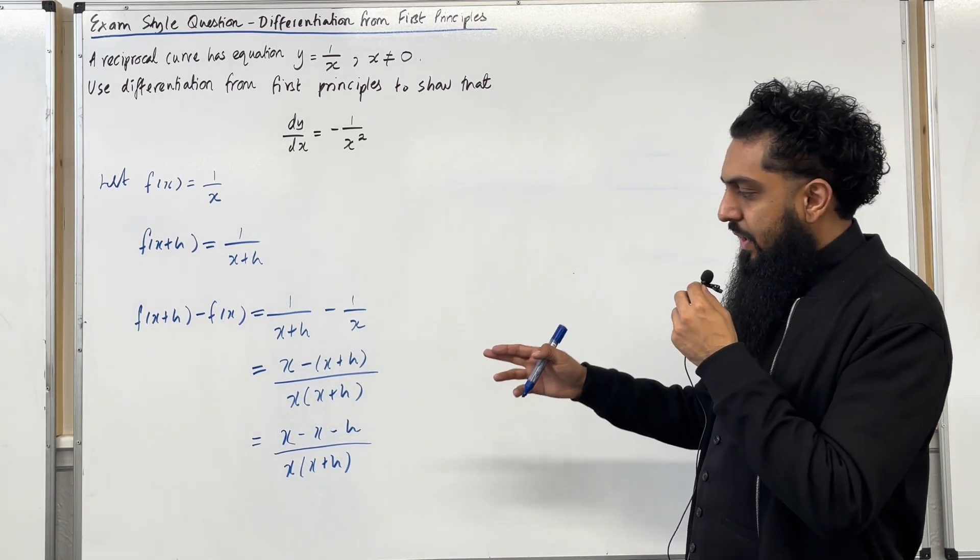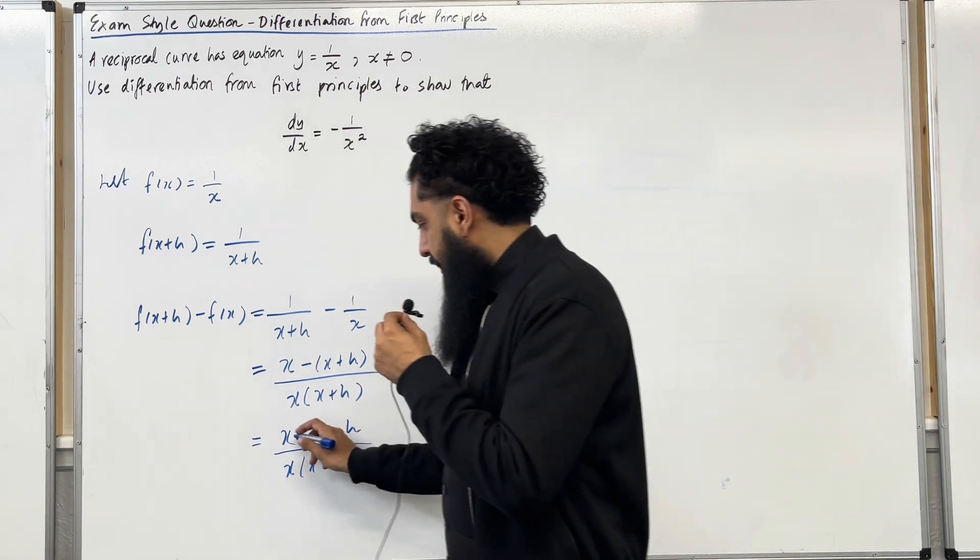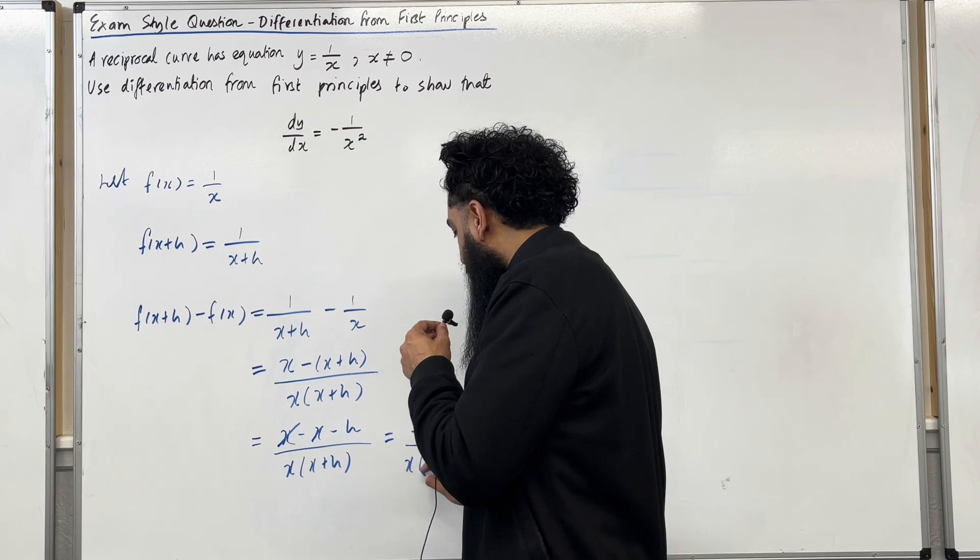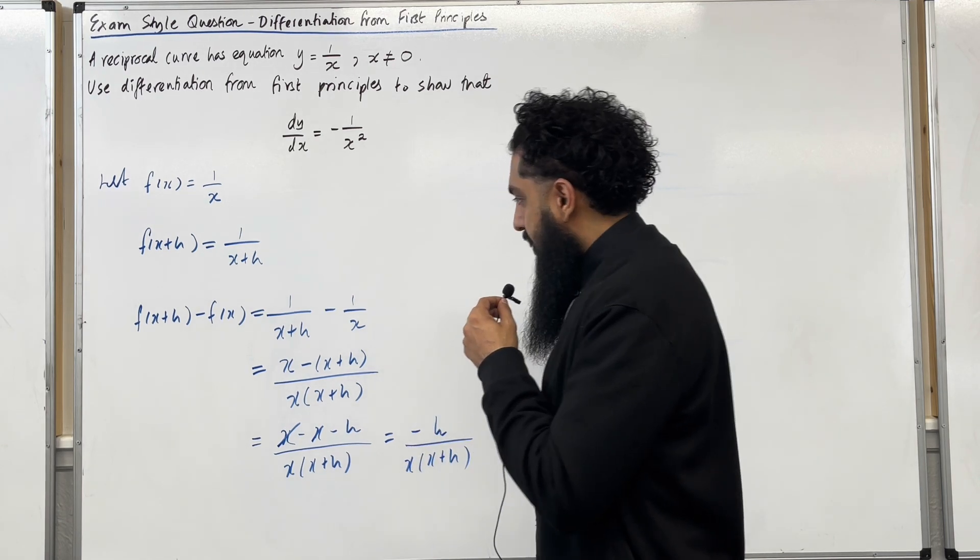So the two x's in the numerator can cancel out, leaving me with minus h over x lots of x plus h.